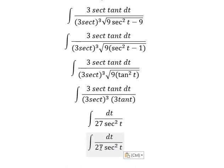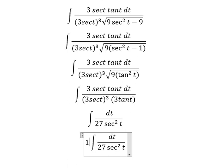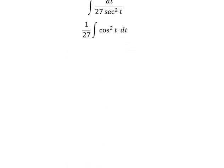Now I will pull 27 outside the integral. This secant squared can be changed to cosine squared t.